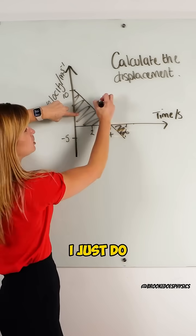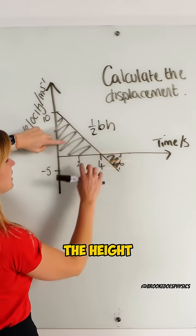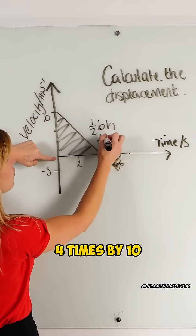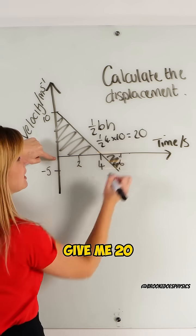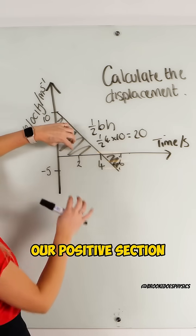So in the area of my triangle I just do half of the base times the height. So a half of 4 times by 10, which is going to give me 20. And again, it's positive 20 because it's in our positive section.